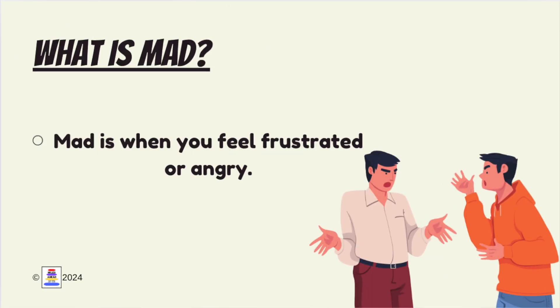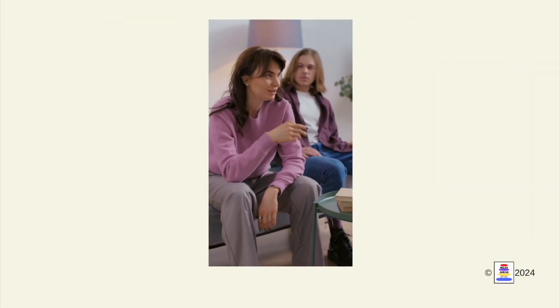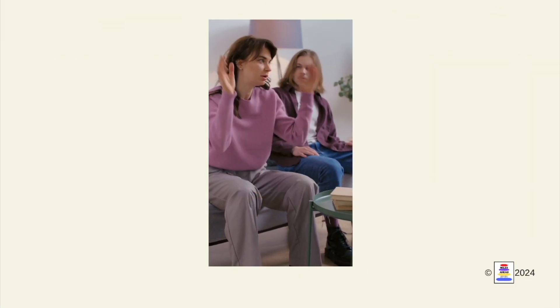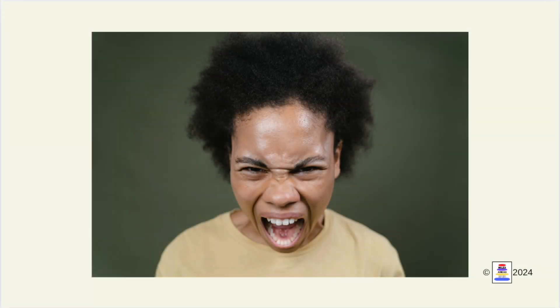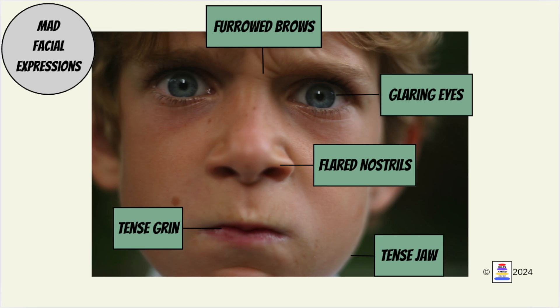What is mad? Mad is when you feel frustrated or angry. Here are some examples of how people look when they're mad. You can often tell someone is mad if they have glaring eyes, furrowed brows, a tense mouth or jaw, and maybe flared nostrils.